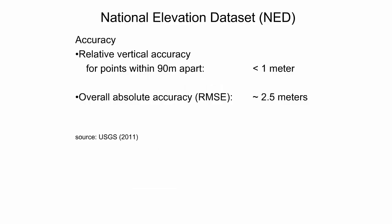The accuracy of the NED directly impacts the products derived from its use. Accuracy can be evaluated by two metrics: relative accuracy and absolute accuracy. Relative accuracy is point-to-point vertical accuracy measuring local differences amongst adjacent elevation values, and is a measure of random errors. During relative accuracy assessment, points within 90 meters of each other had sub-meter relative accuracy, indicating a high degree of relative accuracy. Absolute accuracy analyzes how close NED elevations are to true geodetic elevations and measures both random and systematic errors. The overall absolute accuracy for the NED is approximately 2.5 meters.